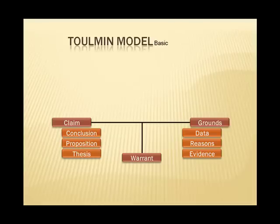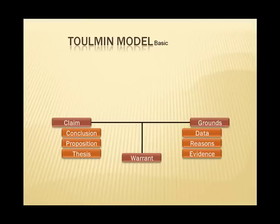For instance, the claim could also be called the conclusion, proposition, hypothesis, or thesis. And the grounds could also be called the data, reasons, and evidence. It's important to know that these terms are sometimes used to refer to slightly different and distinct elements in other theories, but they are also used to describe the very same thing in other instances. Even in this class, I will use the terms somewhat interchangeably. I know it's not fair, but that's just the way it is. That's why we'll take a deeper look at each element. As we go through the explanation of Toulmin's model, try to clarify in your own mind how the terms function within the whole picture of an argument.